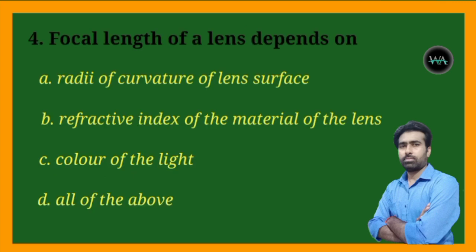Next question: focal length of a lens depends on — radii of curvature of lens surfaces, refractive index of the material of the lens, color of the light, or all of the above?